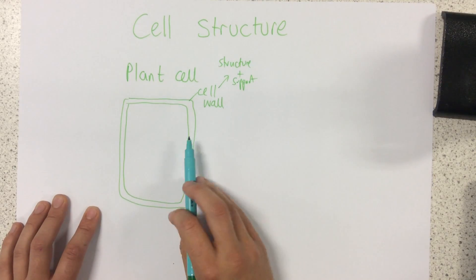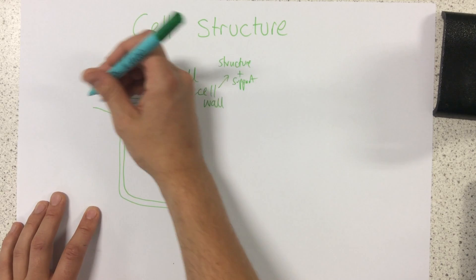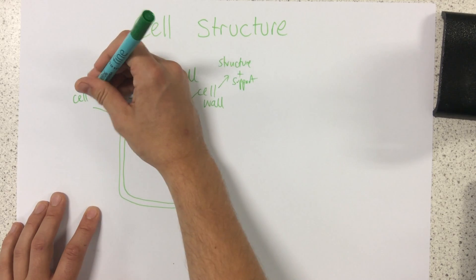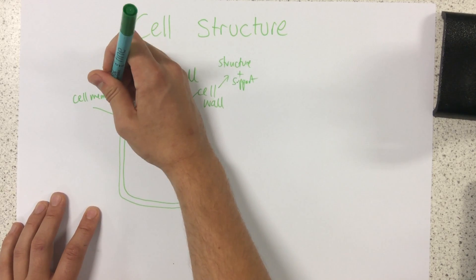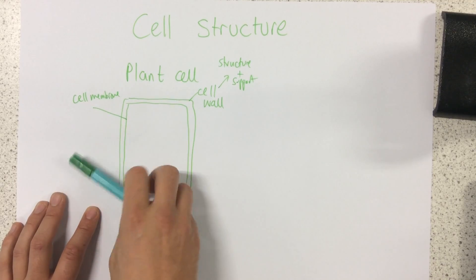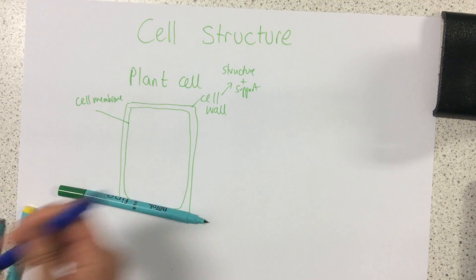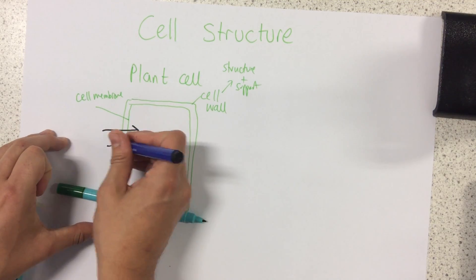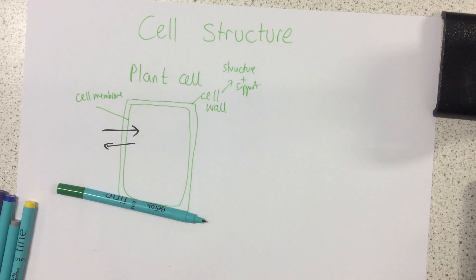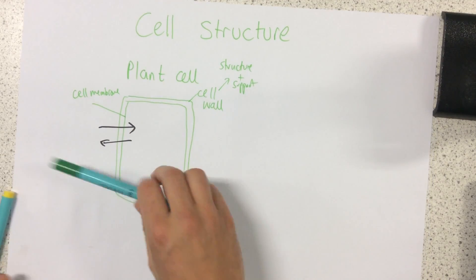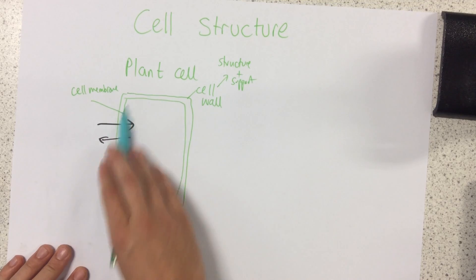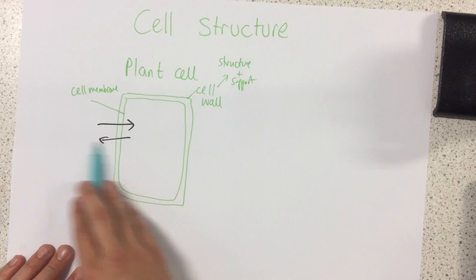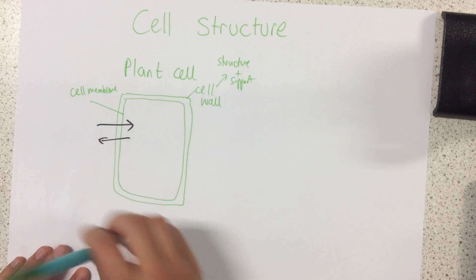Right, just underneath the cell wall we have another structure which is called the cell membrane. What the cell membrane does is it helps to control what comes in and out of the cell. It's a little bit like a bouncer, allowing only certain things in that's going to be good for the cell and certain things out.